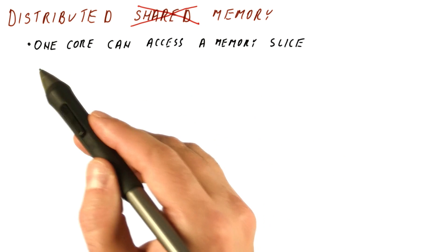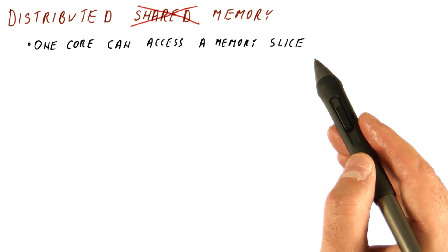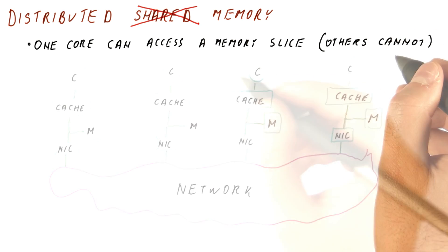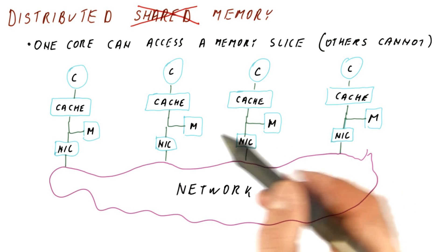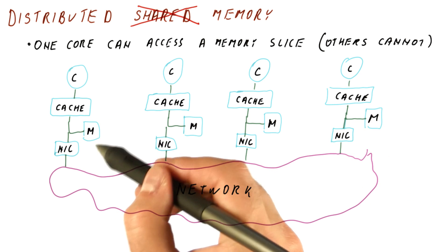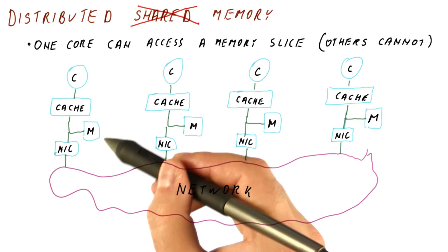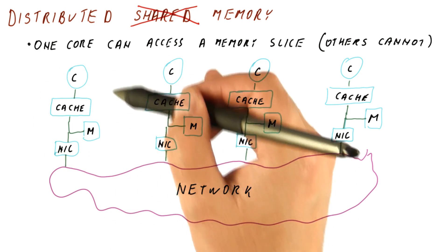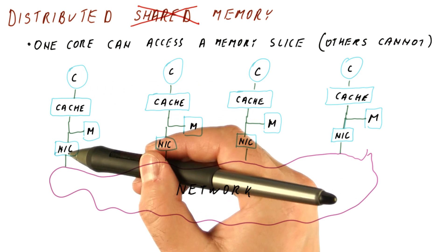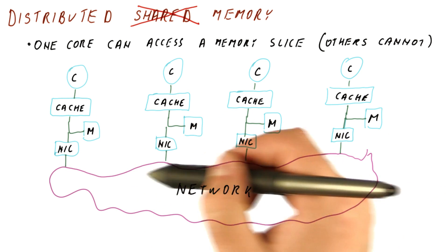No sharing of memory means that only one core can access a memory slice, and the others cannot. So what we now have is cores that have their own caches, and each of them has its own memory that can only be locally accessed here. So really, each of the cores has pretty much what looks like a complete single core computer system, and a network interface card that connects it to a network.